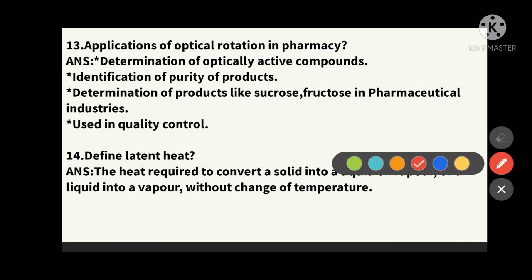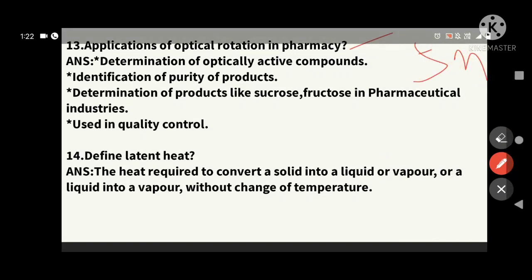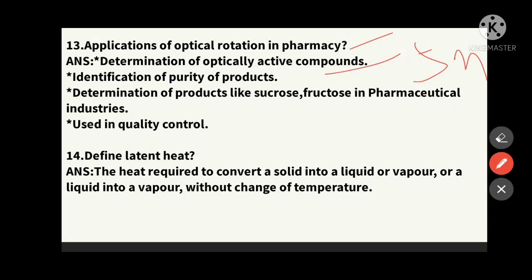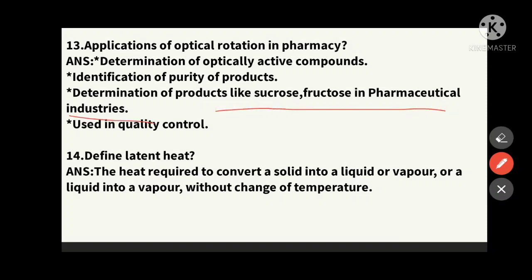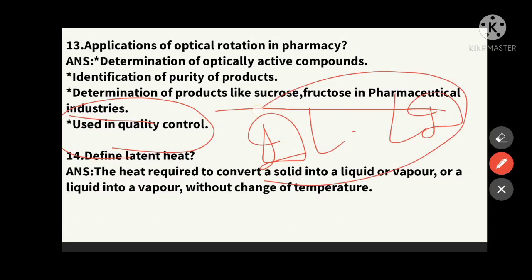The thirteenth question: applications of optical rotation in pharmacy. Optical rotation is used for identification and determination of optically active compounds, to define purity and check the purity of substances. It is used to determine the quality of products like sucrose and fructose in pharmaceutical and sugar industries, and in quality control of drugs, creams, and ointments — using dextrorotatory and levorotatory classifications to determine product purity.